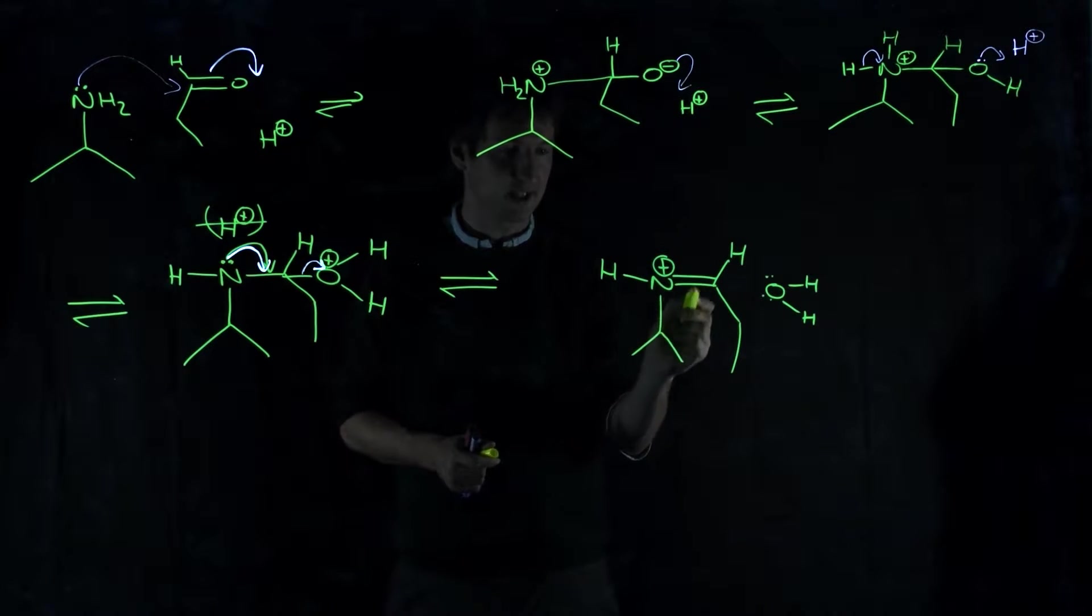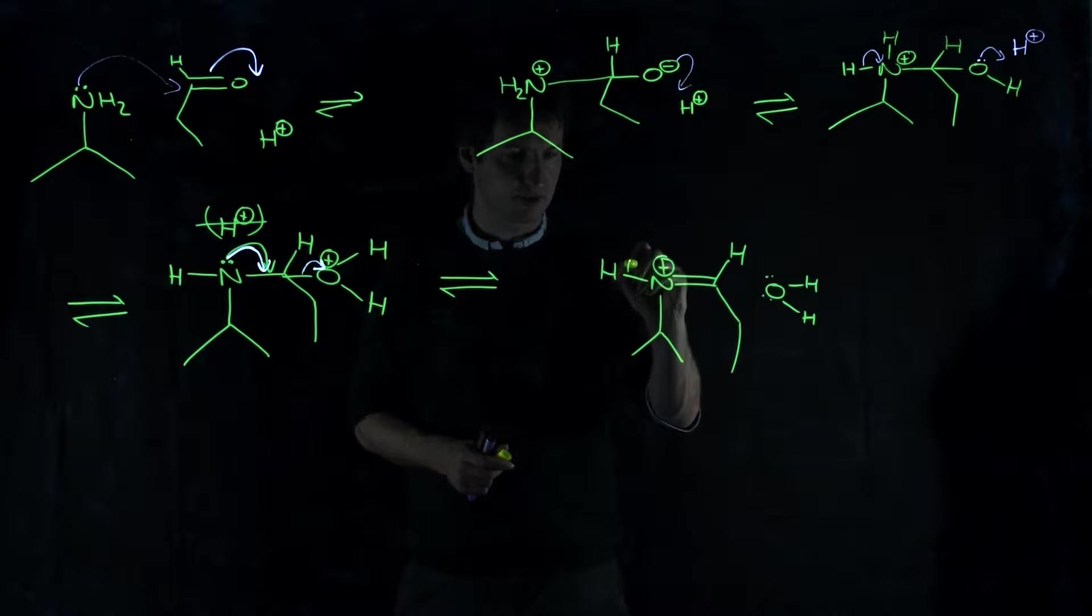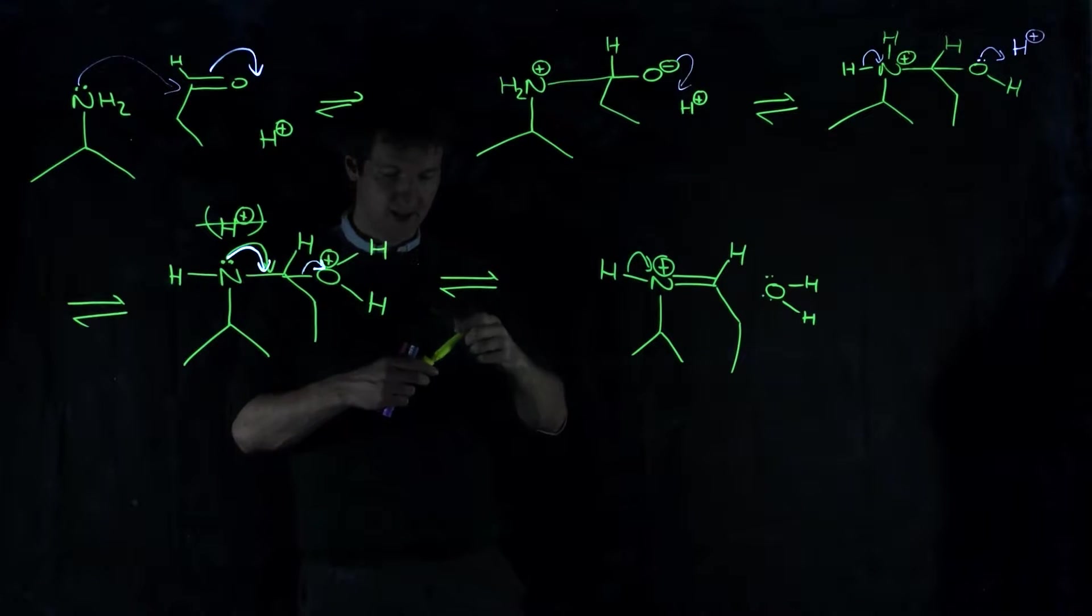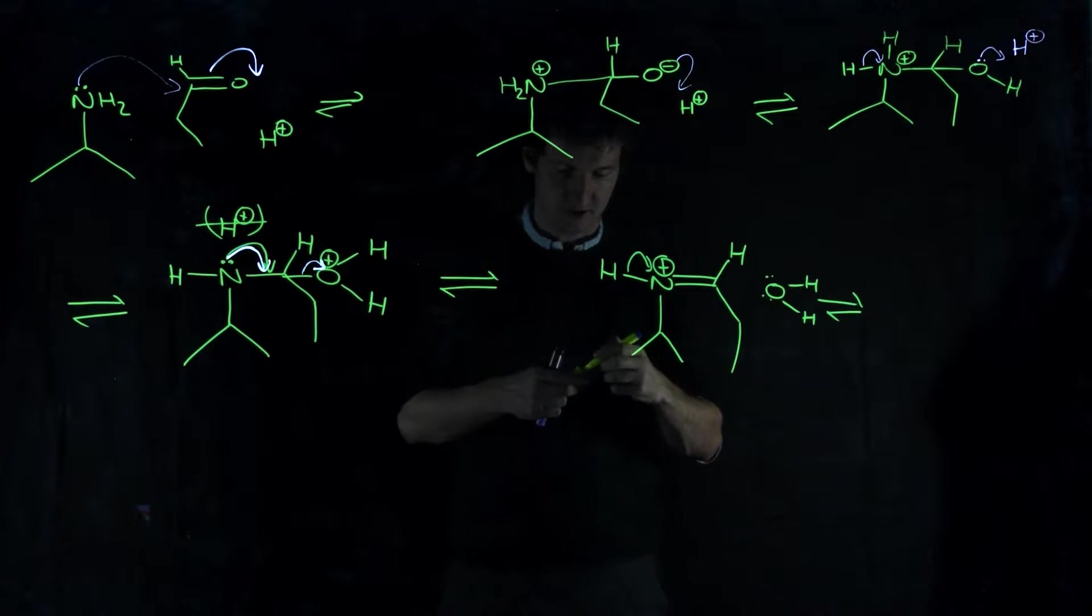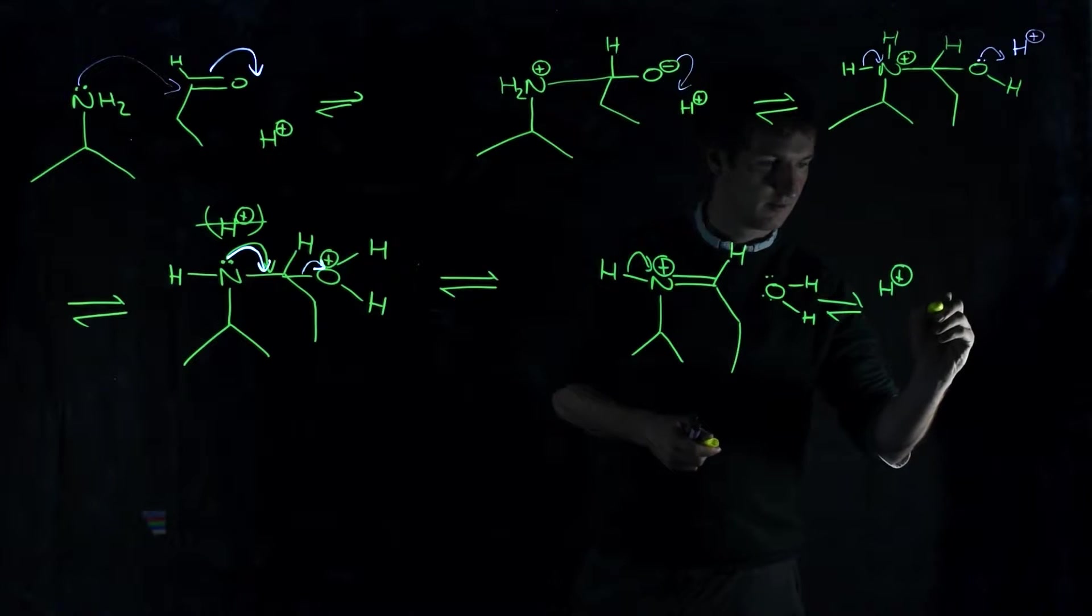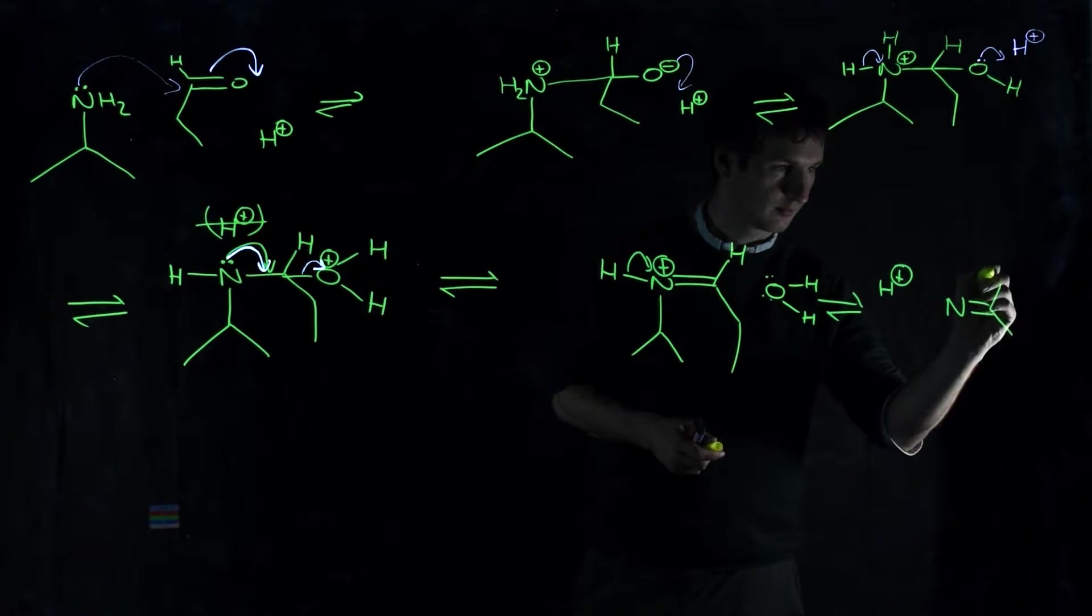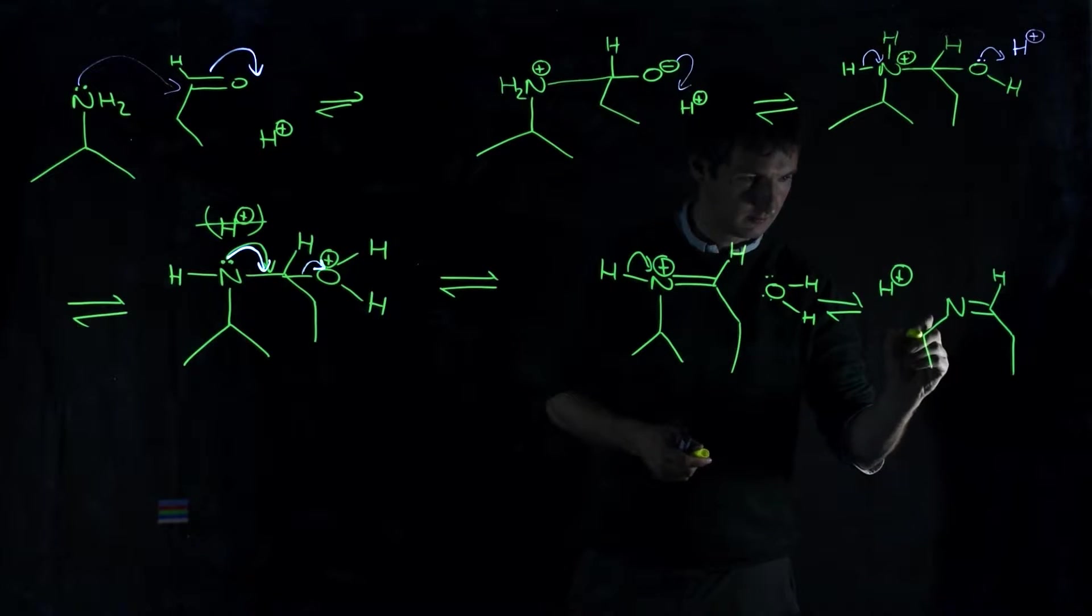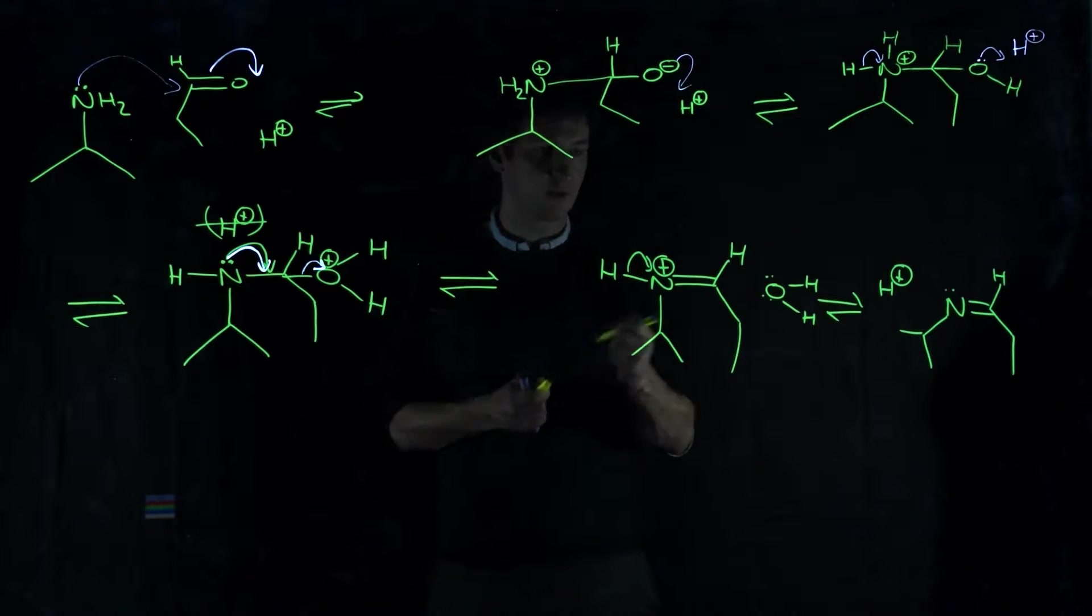And now, what have we got? Well, we have an imine, but it's still got a proton on it. So, if we want that as a neutral species, we're going to lose that proton, and that proton go back and continue to catalyze that reaction. So, if we look at that last step, what we end up with is an imine, and our proton regenerated. And we've kicked out water.